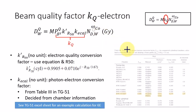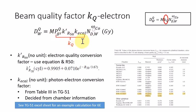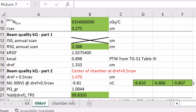So this is the breakdown of the KQ factor for electron beam — it's the multiplication of these three factors. Two of these factors will need the R50 value and the DREF. Let's see an example sheet for a calculation of the 6 MEV electron beam.